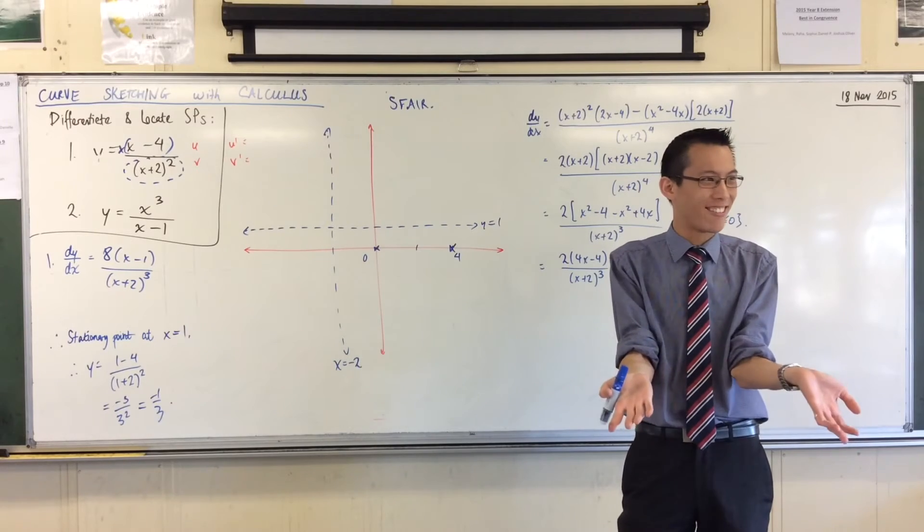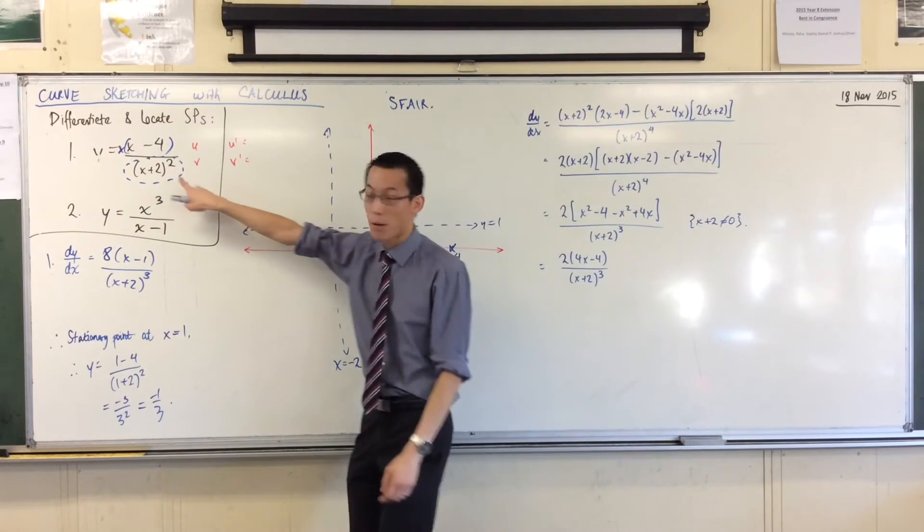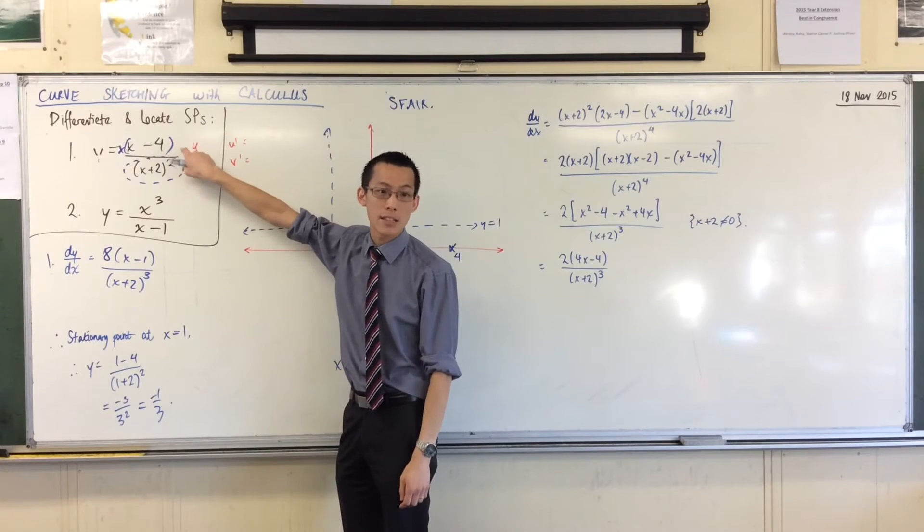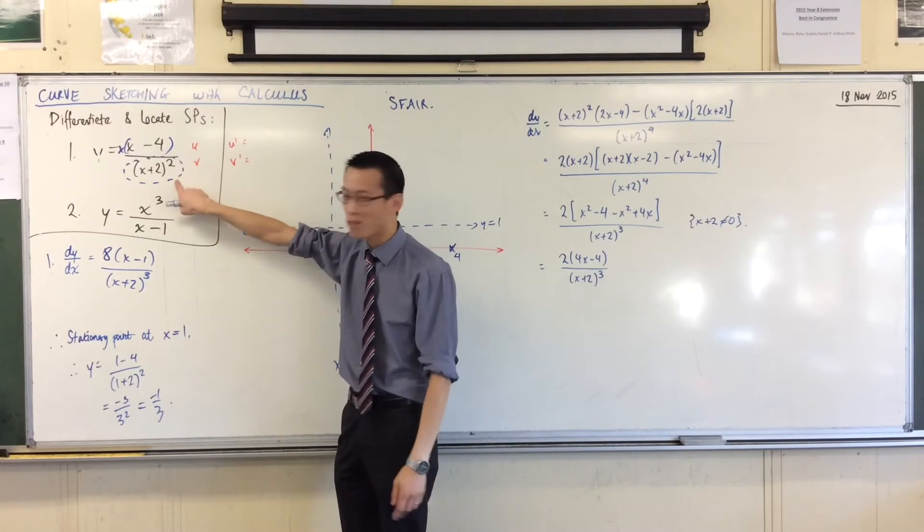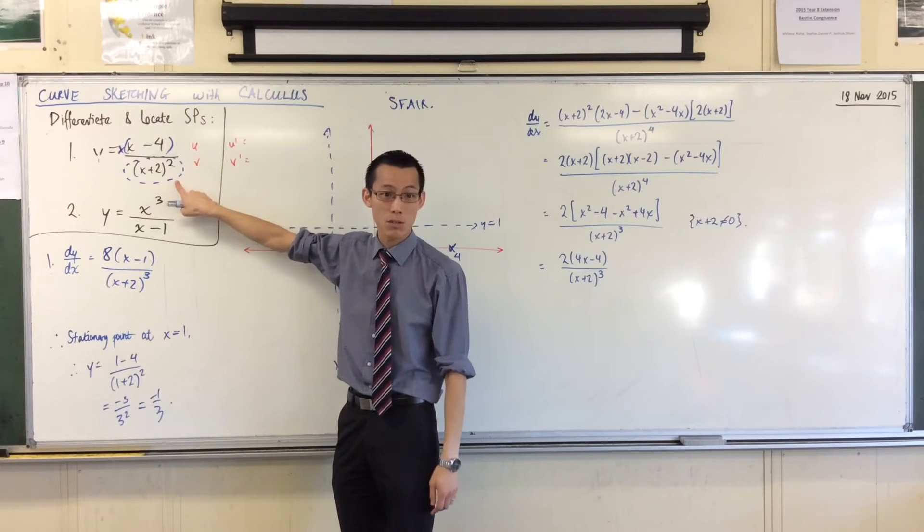So what does it contribute to changing the sign of the whole thing? Answer, it doesn't change anything, right? If I divide by a positive number, then whether this is positive or negative, its sign remains unchanged. So therefore, I'm going to ignore my x plus 2 squared.